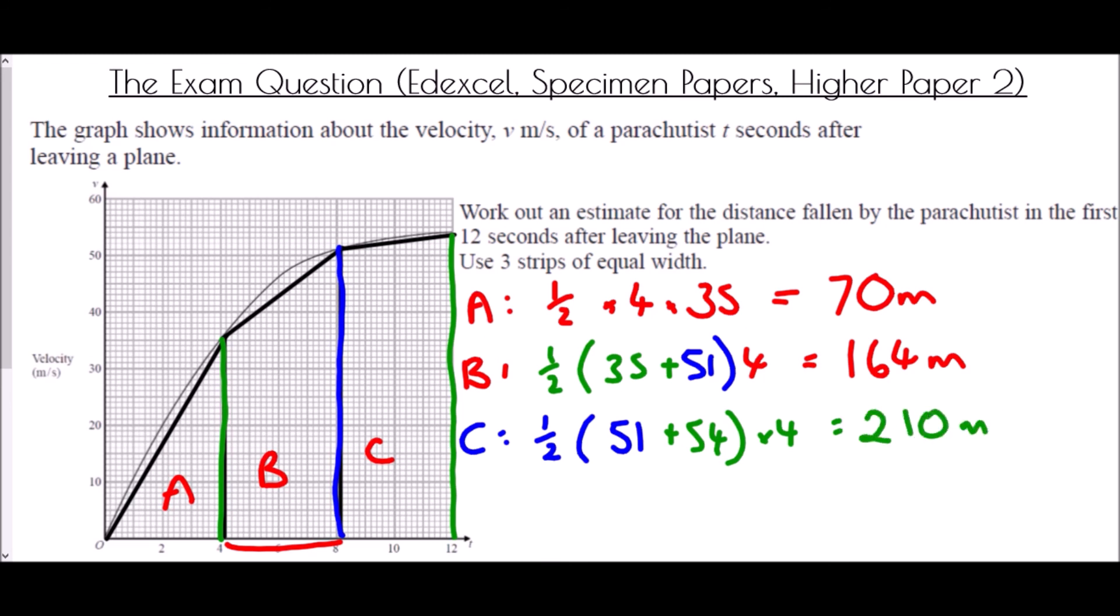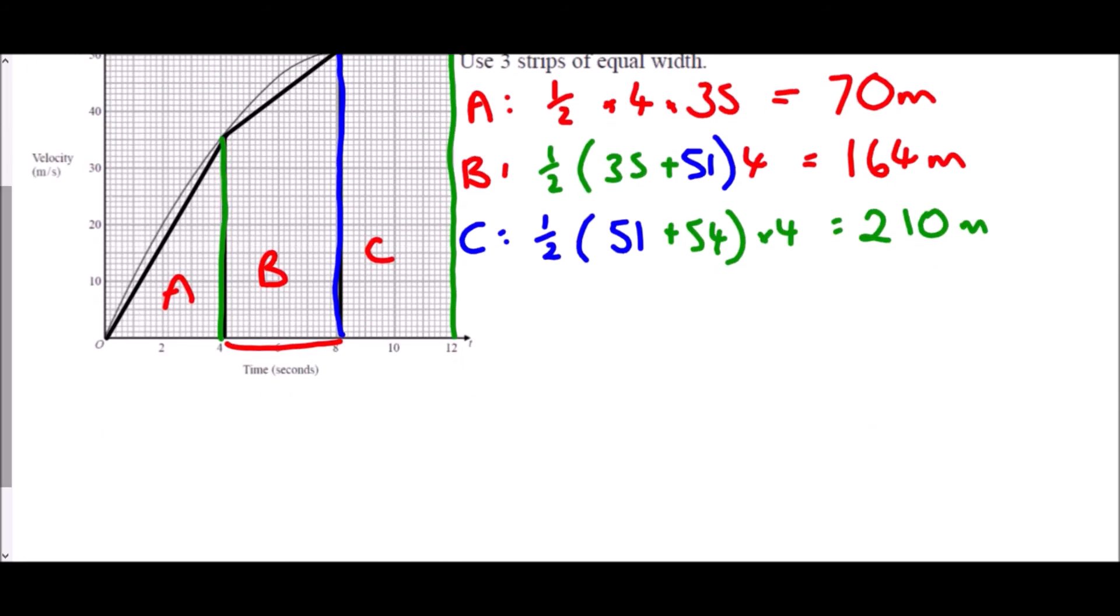So across the entire 12 seconds, we have 210, 164 and 70 all being added together. So 444 metres. That is our estimate of how far it has travelled.